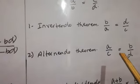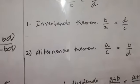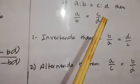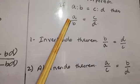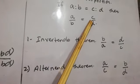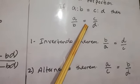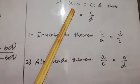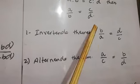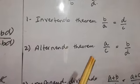The second is the Alternando theorem — it means we will take the alternate values. We will just exchange the two values of B and C with each other. The actual ratio is A by B and C by D. When we alternate B and C values with each other, it will become A by C and B by D. This is known as the Alternando theorem.